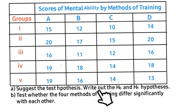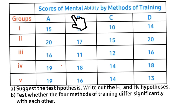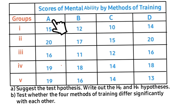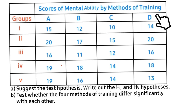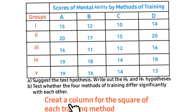Part (a) of the question says: suggest the test hypothesis. Looking at our table, we can see that we are dealing with four samples: A, B, C, D. Since more than one sample exists, we use the F-test.